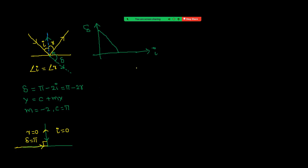One more important point: the law that angle of incidence equals angle of reflection is not only for a plane surface. Whatever the shape of the reflecting surface, this law is always valid. The angle of incidence and angle of reflection at any point are always equal.